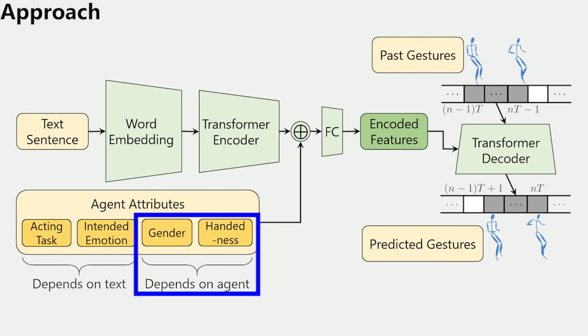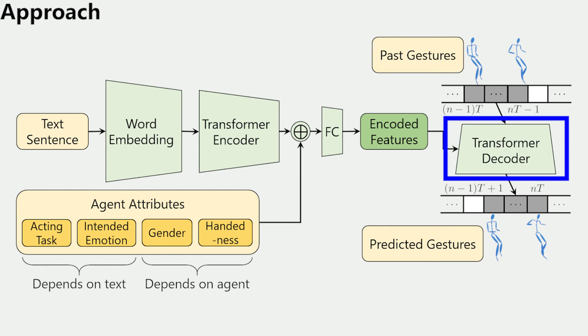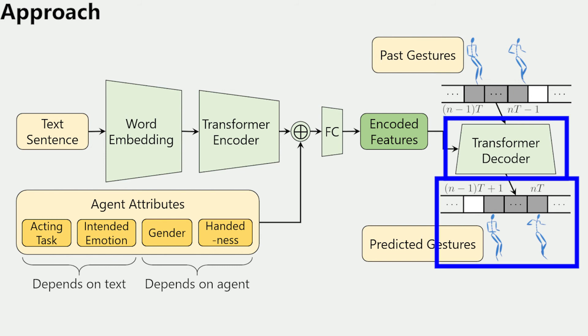We consider two genders, female and male, and we consider the agent to be either left-handed or right-handed. We feed the encoded features into our transformer decoder together with the gestures from the past timesteps. Our decoder then predicts the gestures for the subsequent timesteps.